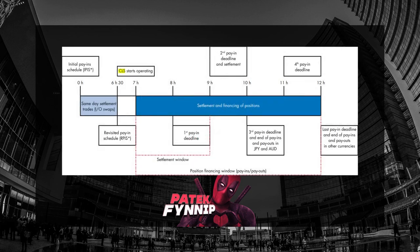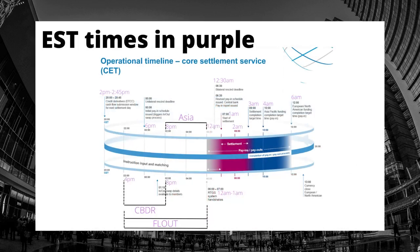In this graph you can see the initial pay-in schedule, which goes from midnight CET to 6:30am CET — in EST that is 6pm to 12:30am. This is actually the real Asian killzone. ICT teaches 8pm to midnight EST, but we now use 6pm to 12:30am EST. In the next graph, you can see the operational timeline from CLS in CET time zone. This whole thing covers the CBDR, Asian range, and Flout concept, and London Open is also derived from this graph. However, after 1pm CET (7am EST), the New York Open killzone begins and America takes over.